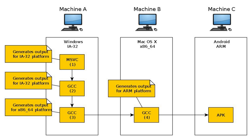Compiling for multiple machines. For example, a company may wish to support several different versions of an operating system or to support several different operating systems. By using a cross-compiler, a single build environment can be set up to compile for each of these targets.